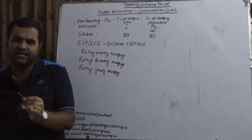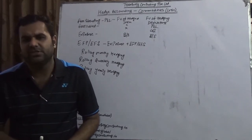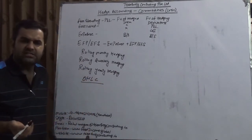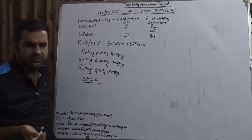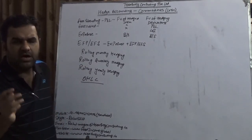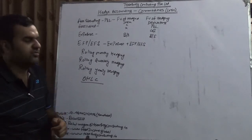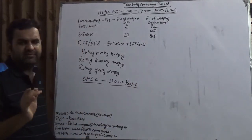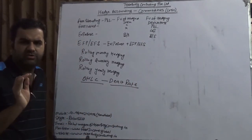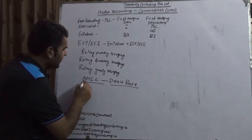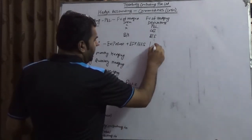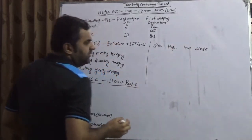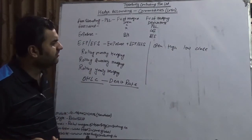Another very important concept to deliberate is the OHLC cycle — Open, High, Low, Close. Whenever you are booking a deal — referred to as the dealt rate — the Treasury Department of relevant companies should be efficient enough to decide which rate they are going to use: Open, High, Low, or Close.